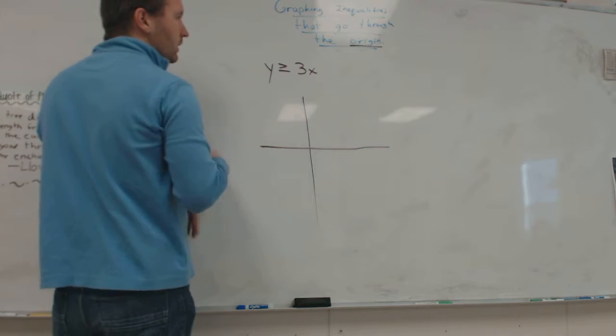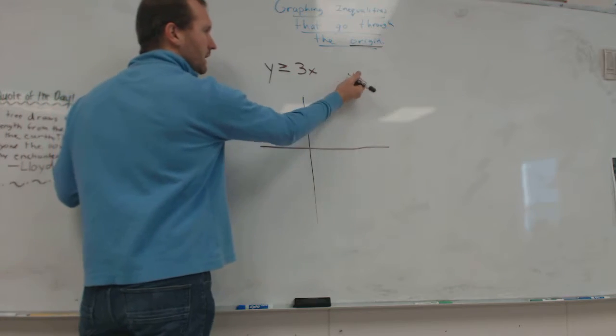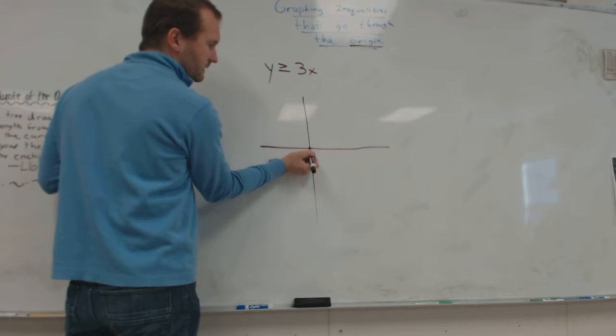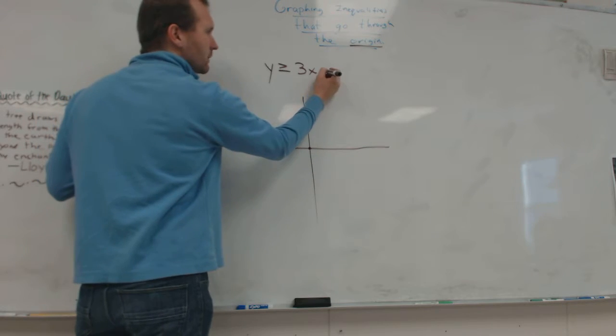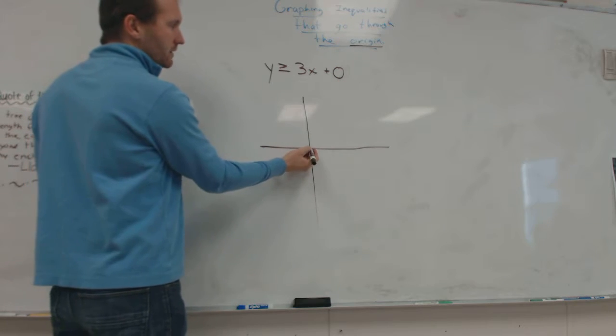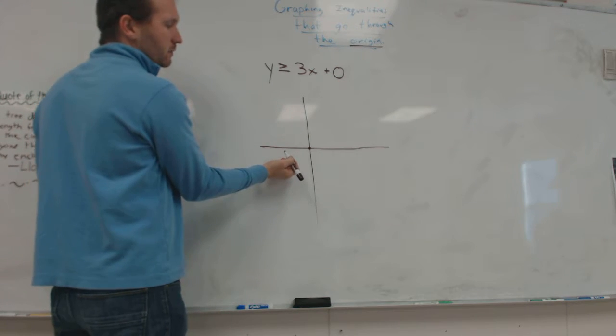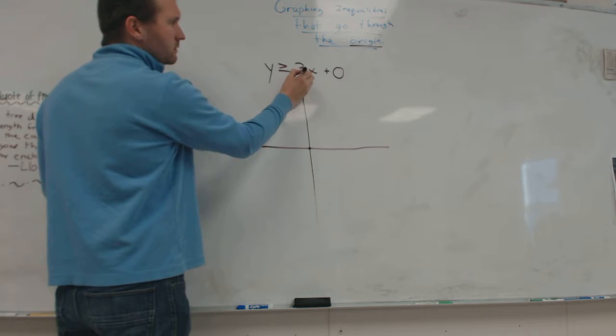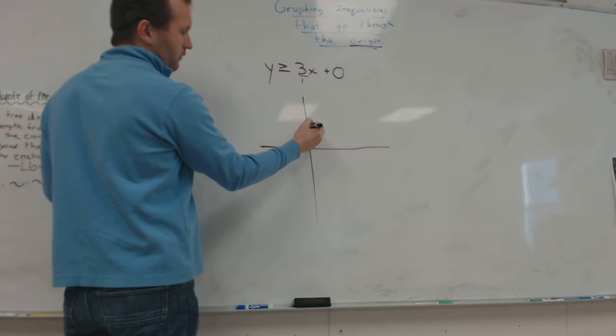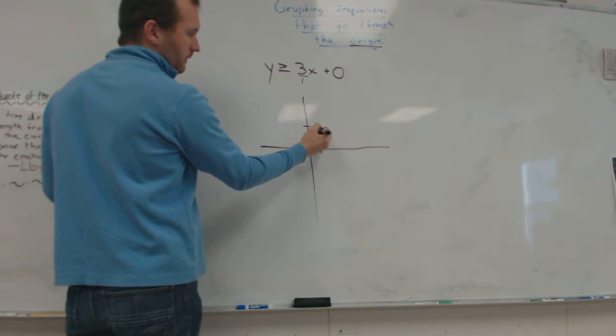So this one goes through the origin. I can tell because it's not plus 1. That means I know my first point is right here, zero. We can imagine a plus zero here. So I know that I start at y equals zero. I can still use my slope. In this case the slope is 3 over 1. So I go up 3 over 1.